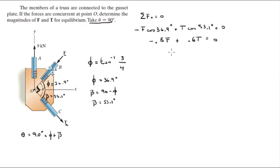Is equal to 0. So 0.6 T is equal to 0.8 F. This is an equation. Therefore F is equal to 0.75 T.